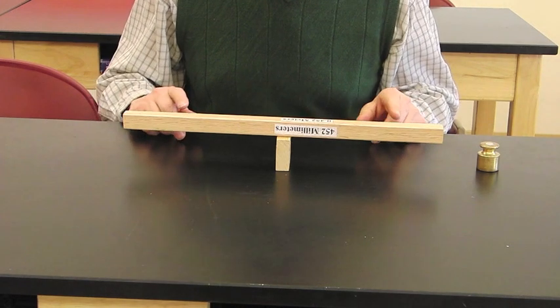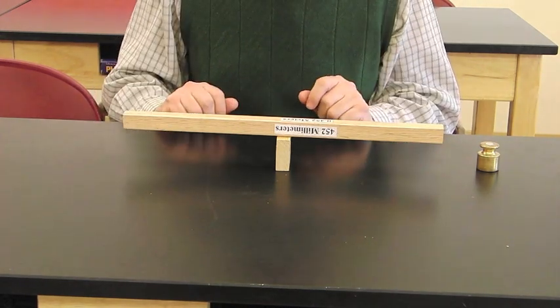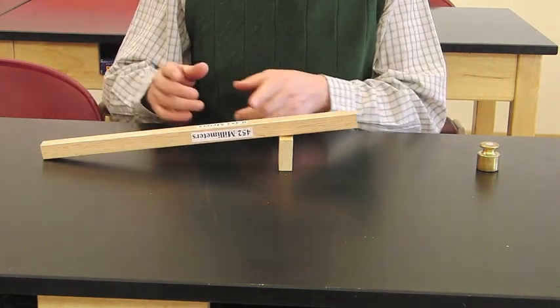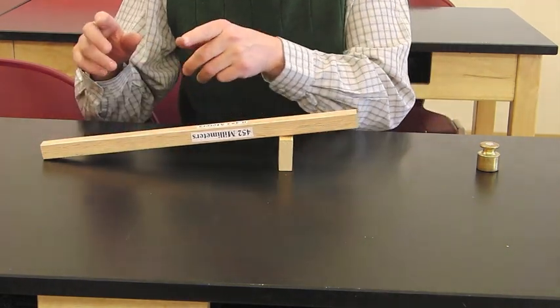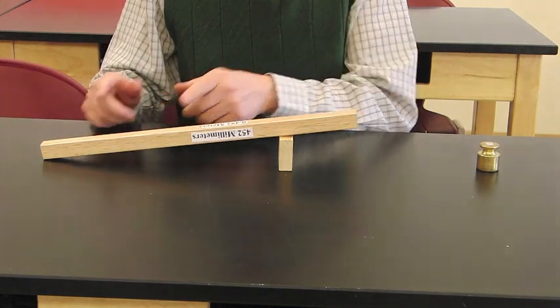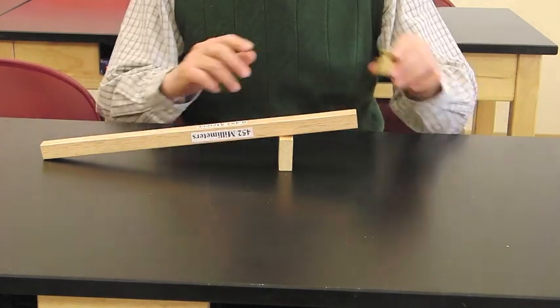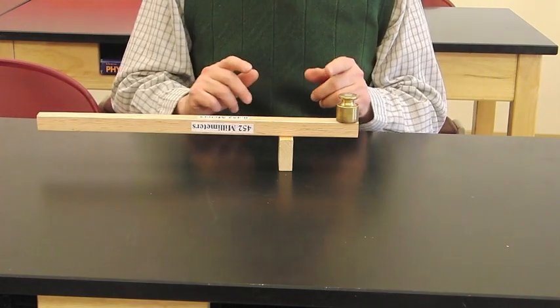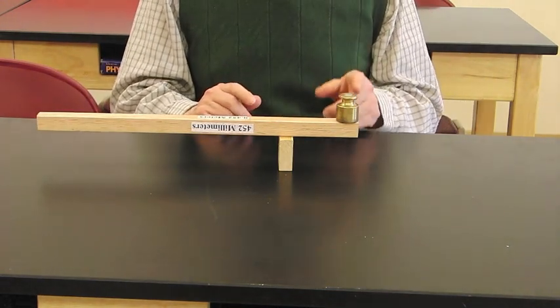Sometimes the weight of the bar itself comes into play. Right now this bar balances. But if I shift it over to the right, it's not balanced because the weight of the bar is adding more torque on this side than it is on this side. But if I have a heavy weight added to this short side, once again, I can get it to balance. And we're going to see the same thing happening on the mobile.